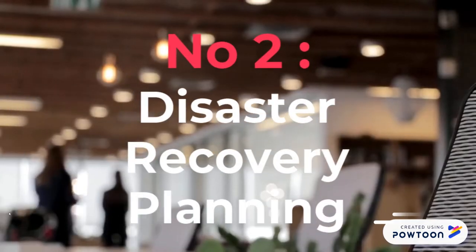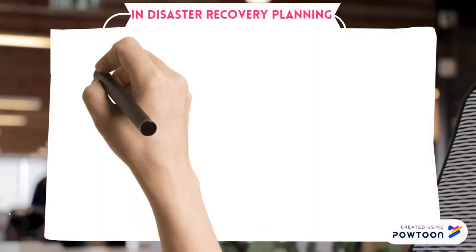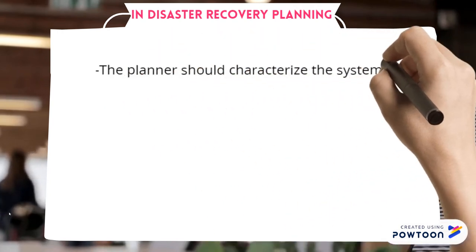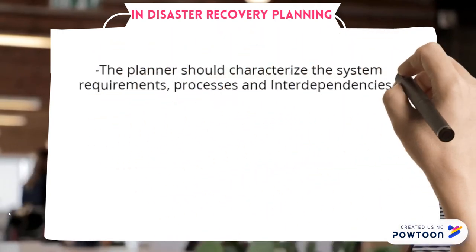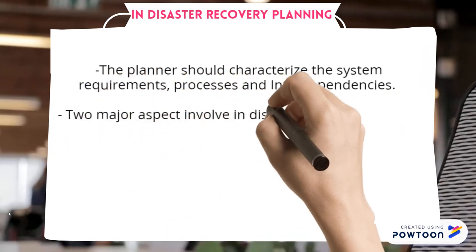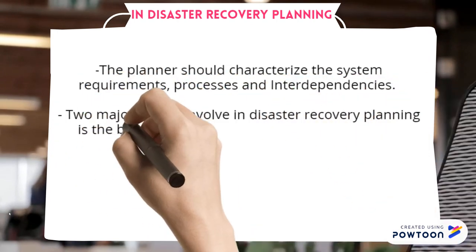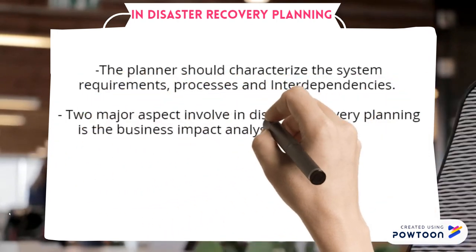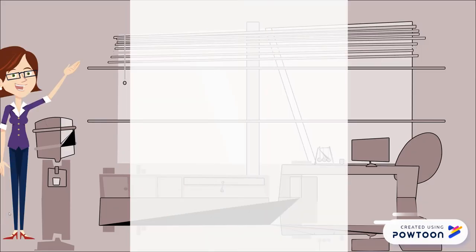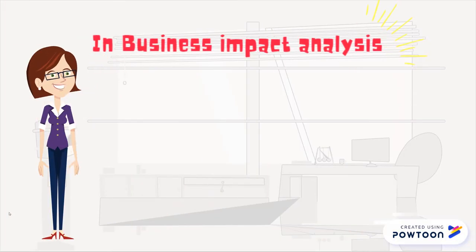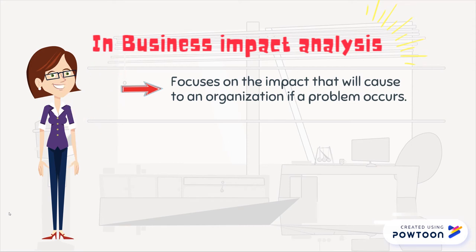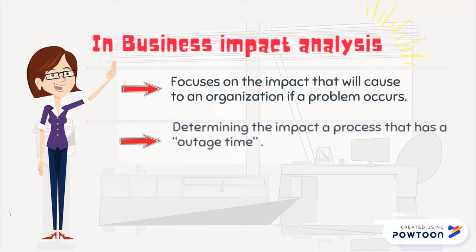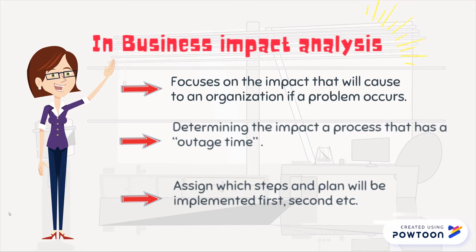The second important topic is disaster recovery planning. The planner should characterize the system requirements, processes, and interdependencies. Two major aspects involved in disaster recovery planning are the business impact analysis and the recovery plan. In business impact analysis, the focus is on the impact that will be caused to an organization if a problem occurs, determining the impact a process has during an outage.